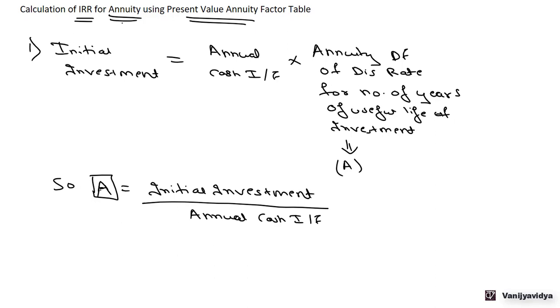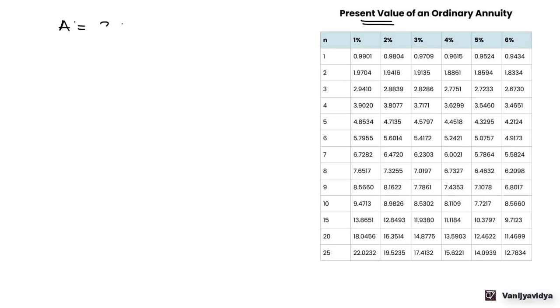Now let us see one example. Here we have an annuity factor table. Let's say A is 3.85 and the life of the project is 4 years. The second step is to find the value of A in the annuity factor table.